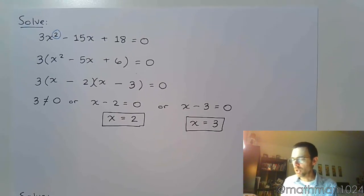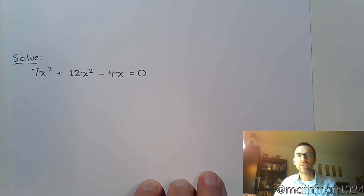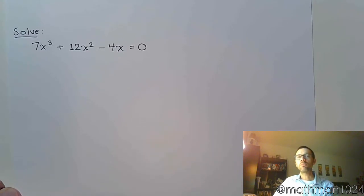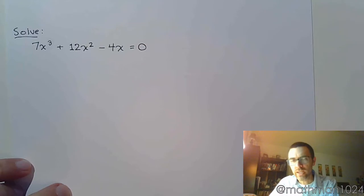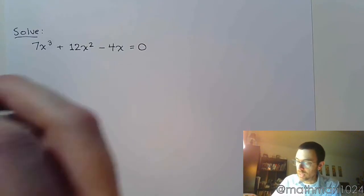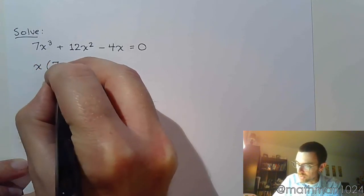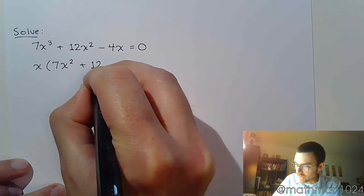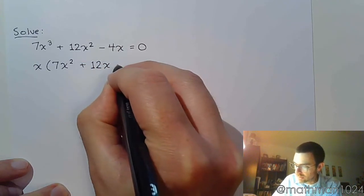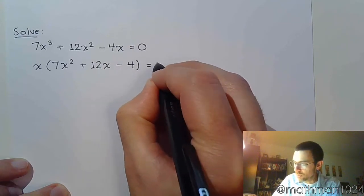Let's take a look at the next equation: 7x to the third plus 12x squared minus 4x equals zero. If you look at this, there is a common factor for all three terms — we can factor x out of each of these. So this now becomes x times 7x squared plus 12x minus 4, equal to zero.